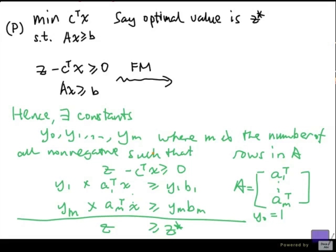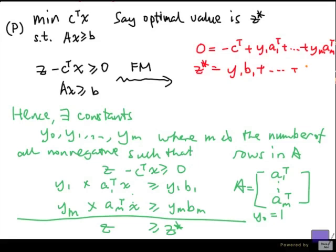If you look at the coefficients of x, if we add up all these inequalities, there's no variable x at the end. So that means that we must have 0 equal to minus c transpose plus y1 a1 transpose and so on to ym am transpose. And the right-hand side is z star, so z star must be y1 b1 plus and so on up to ym bm.